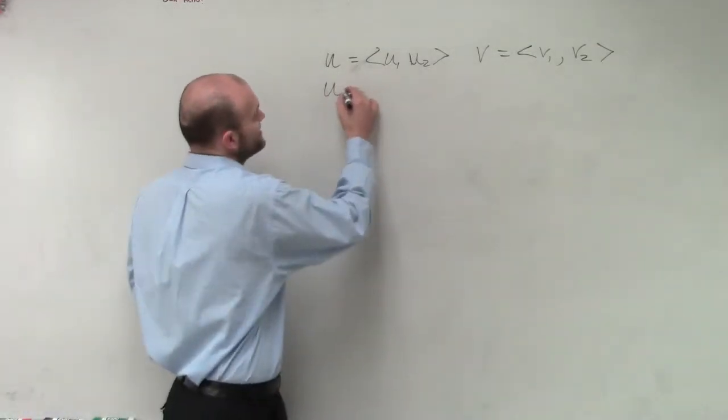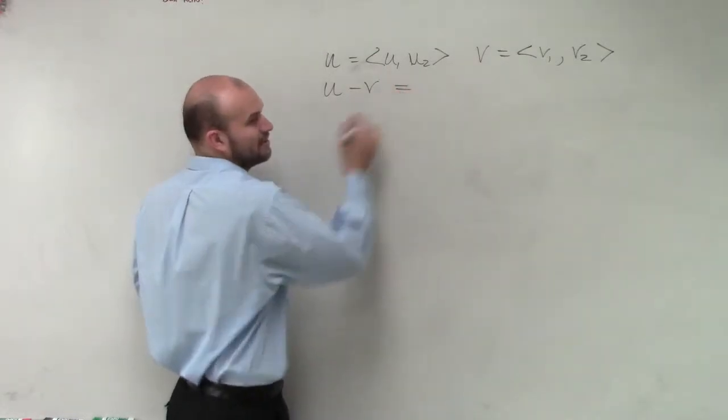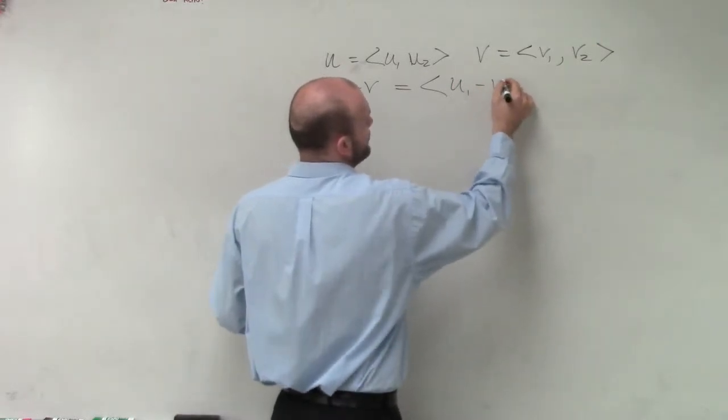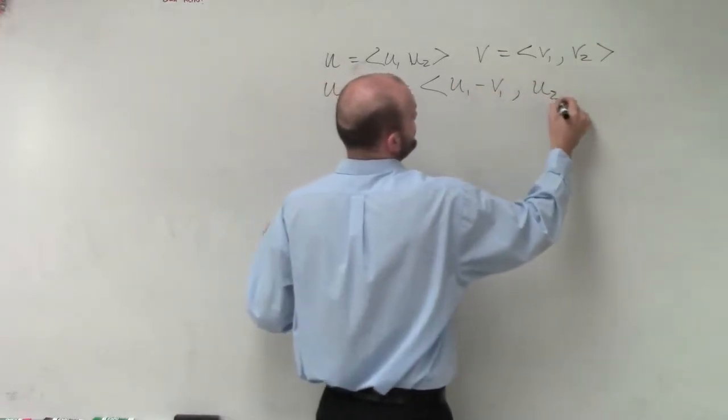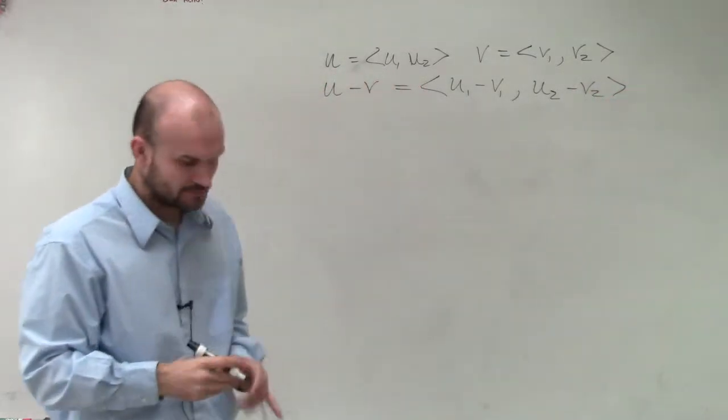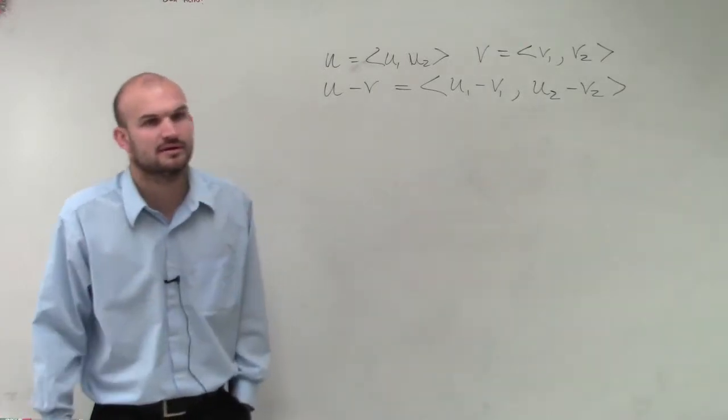So, if I say what is now u minus v, algebraically, we can just represent this as u1 minus v1 comma u2 minus v2, right? So, algebraically, it's going to pretty much kind of make a lot of sense, okay?